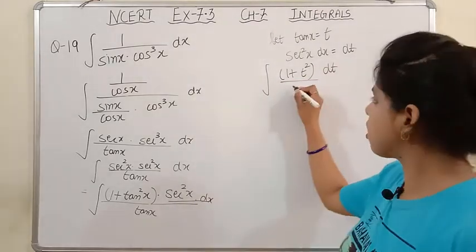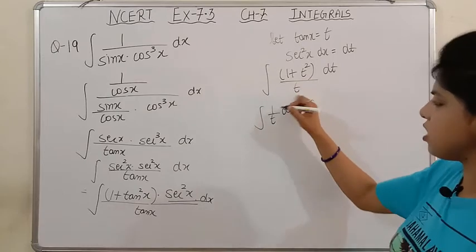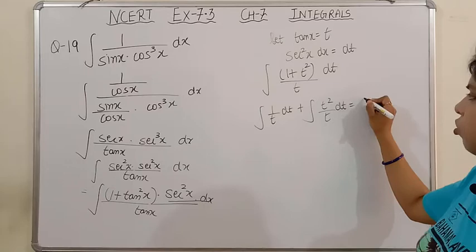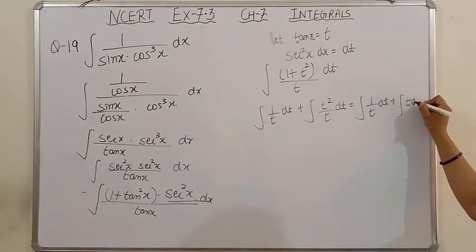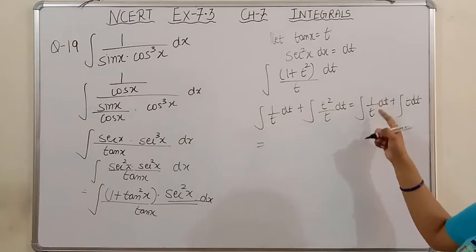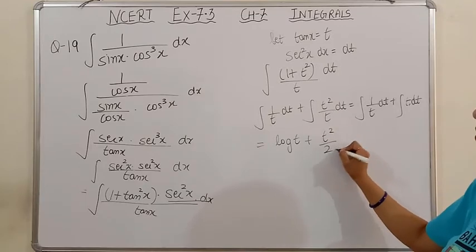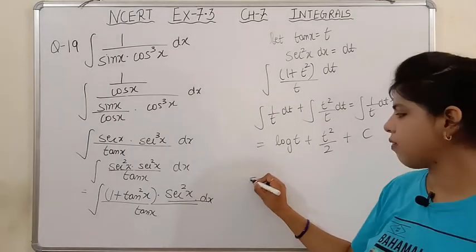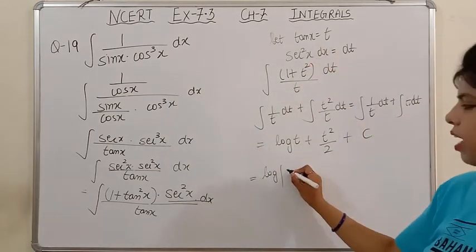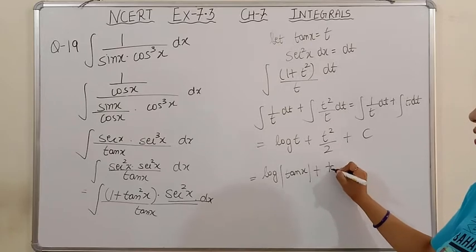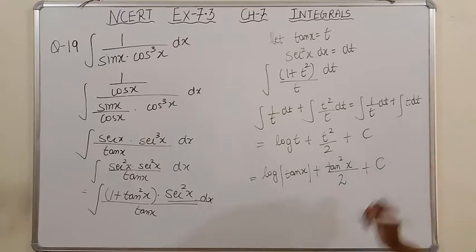Now split this: we get ∫(1/t) dt + ∫(t²/t) dt = ∫(1/t) dt + ∫t dt. The integration of 1/t is log t, and the integration of t is t²/2, plus C. Finally, replace t with its value — since the original function was in x form, the answer must also be in x form. So t = tan x gives us: log(tan x) + tan²x/2 + C. This is our final answer, please note down.